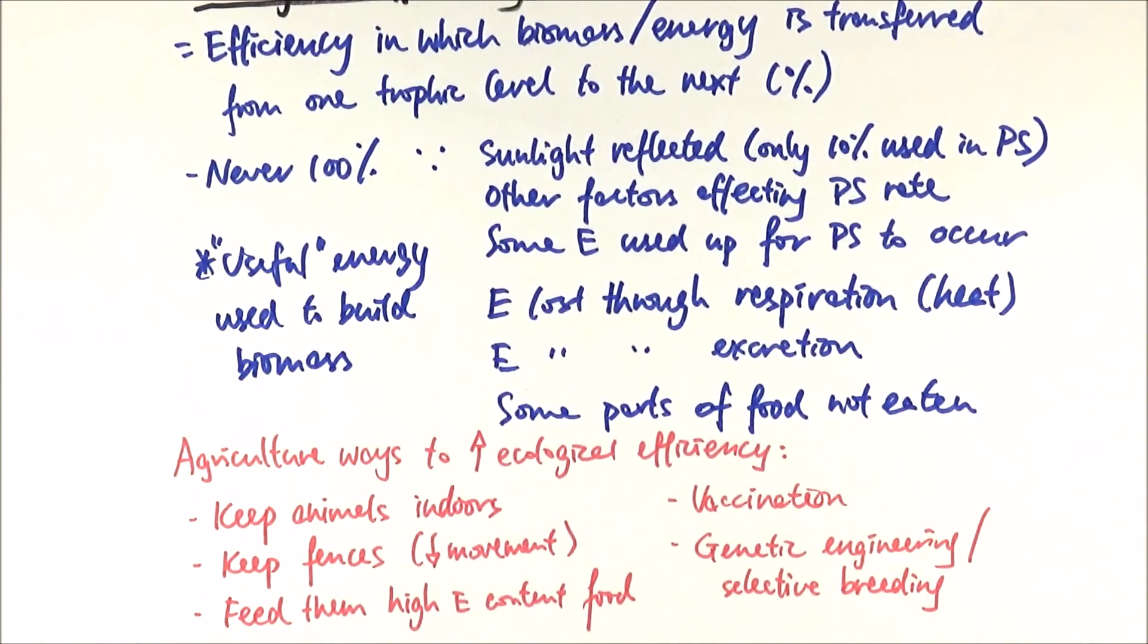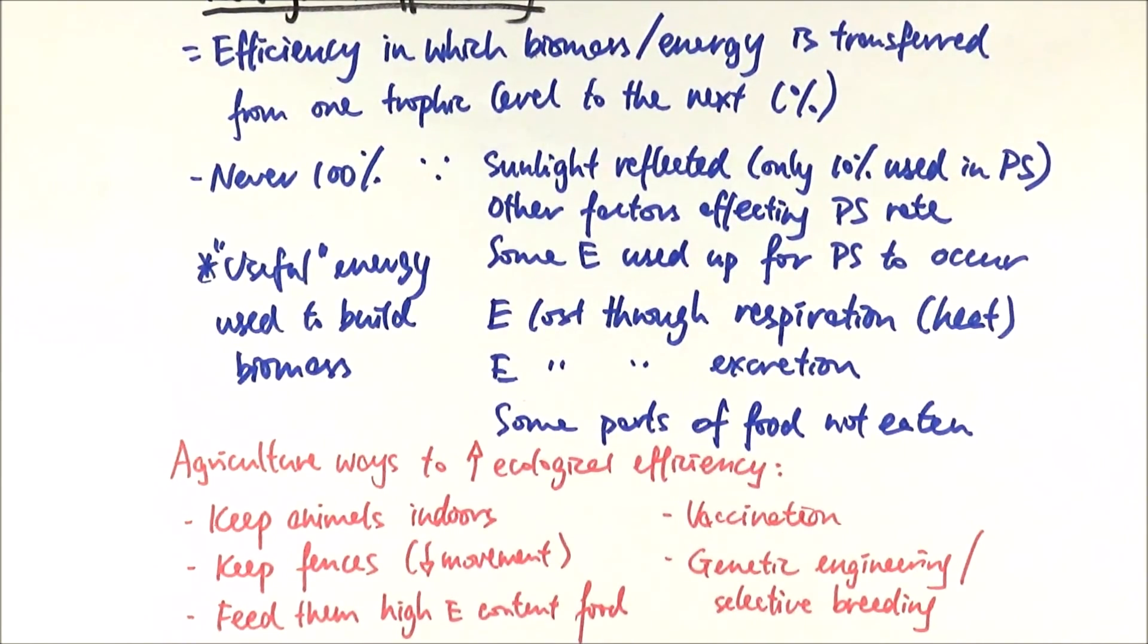So we've talked about trophic levels, the different stages in the food chain, biomass being the mass of living material without the water content, and how we correlate that to energy within a particular trophic level. Also thinking about what energy can be lost and how we can maximize the efficiency of energy transfer.